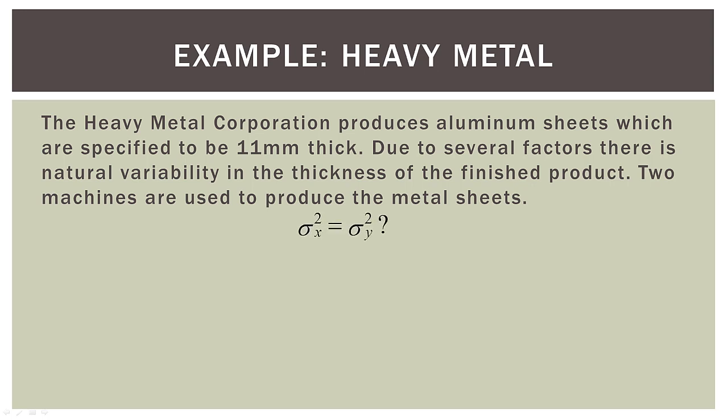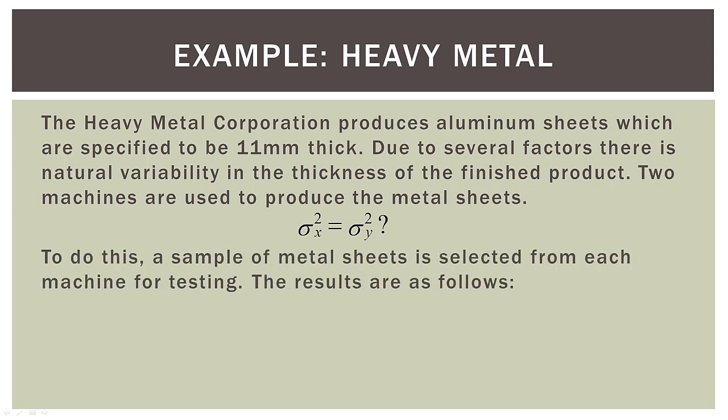We're gonna test whether or not the variance of machine one is the same as the variance of machine two. So to do this, a sample of metal sheets is selected from each machine for testing, and the results are as follows.